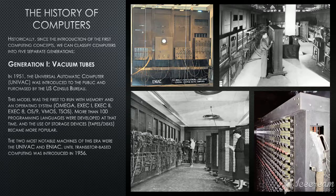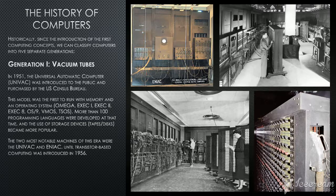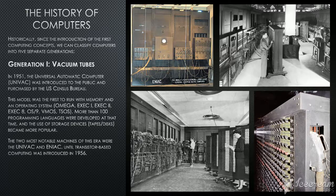In 1951, the Universal Automatic Computer, or the UNIVAC, was introduced to the public and purchased by the US Census Bureau. This model was the first to run with memory and an operating system. More than 100 programming languages were developed at that time, and the use of storage devices such as tape devices and disks became more popular. The two most notable machines of this era were the UNIVAC and the ENIAC, until transistor-based computing was introduced in 1956.